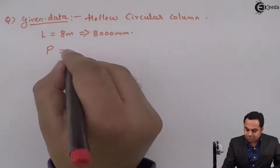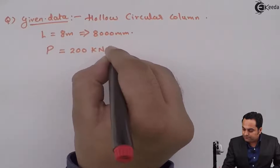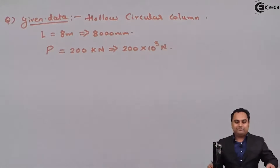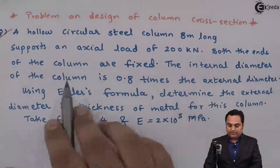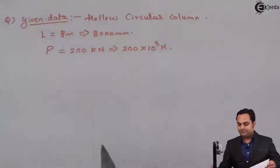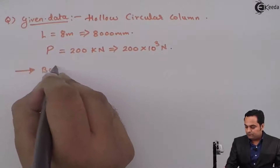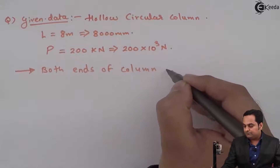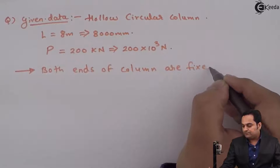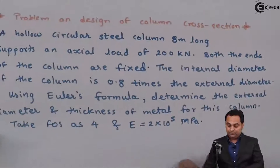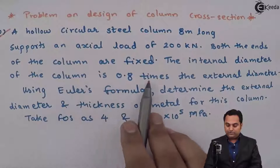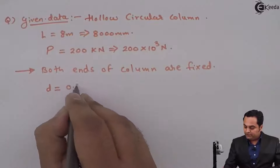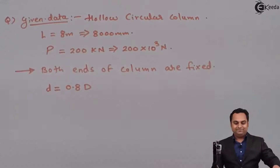The column supports an axial load P of 200 kilonewton, that is 200×10³ Newton. Both ends of the column are fixed. The internal diameter of the column is 0.8 times the external diameter, so internal diameter d = 0.8 × D, where D is the external diameter.